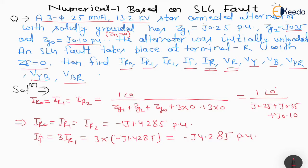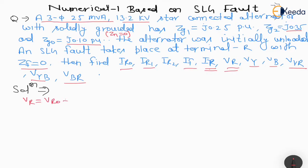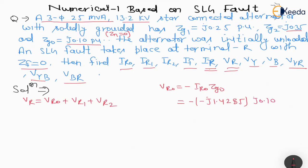How will we calculate the value of Vr? Vr = Vr0 + Vr1 + Vr2. First, Vr0 = -IR0 × Zg0 = -(-J1.4285) × J0.10. Note that minus × minus = plus, and J × J = J² = -1, so a minus sign appears. Therefore Vr0 = -0.14285 per unit.